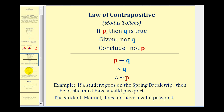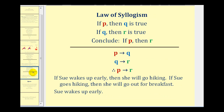Let's take a look at one more method of deductive reasoning called the law of syllogism. It states that if P then Q is true, and if Q then R is true, we can conclude that if P then R. Using notation: if P then Q, if Q then R, therefore if P then R.